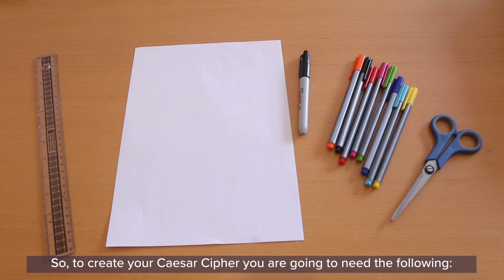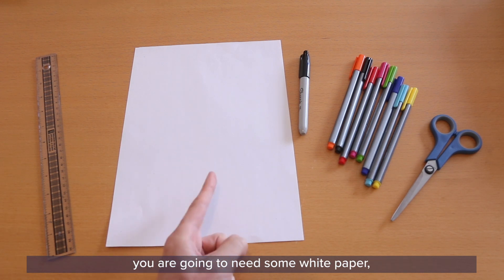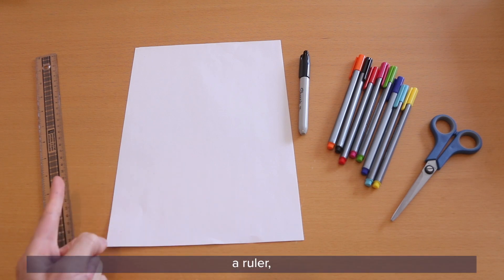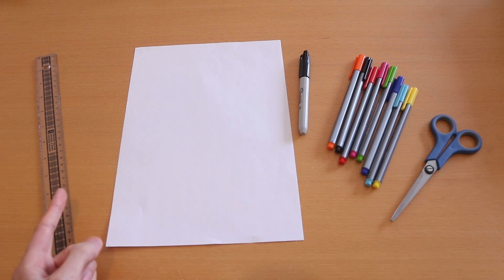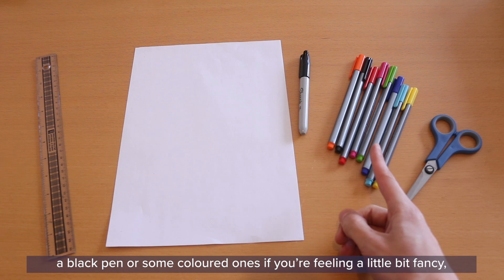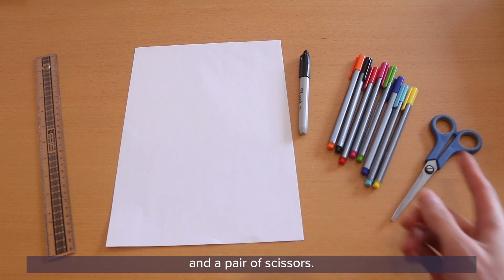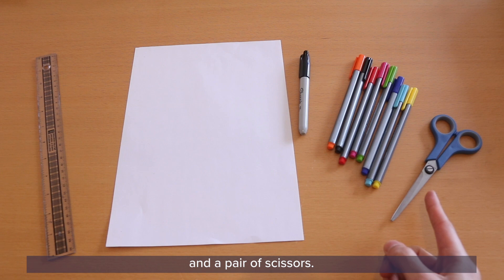So to create your Caesar cipher, you are going to need the following. You're going to need some white paper, a ruler, a black pen or some colored ones if you're feeling a little bit fancy, and a pair of scissors.